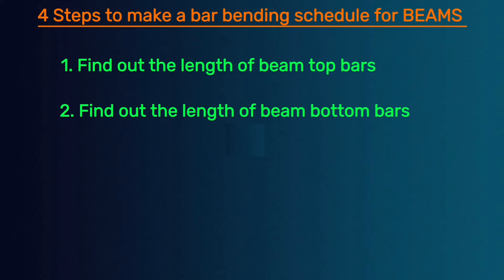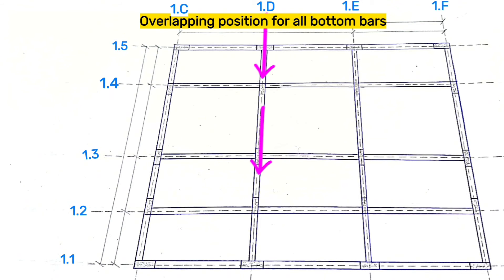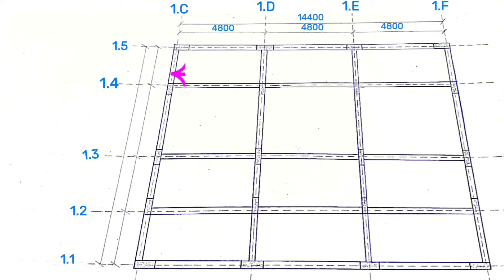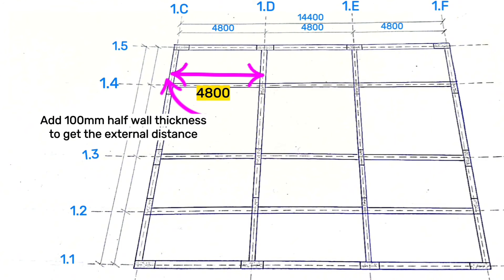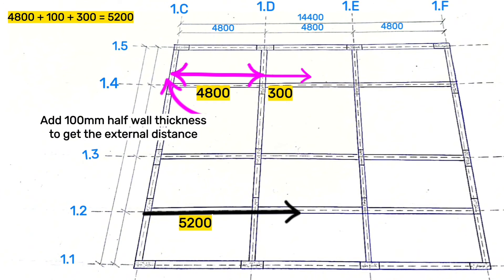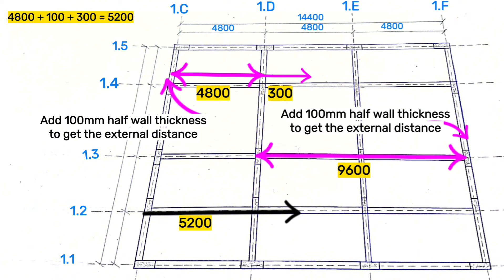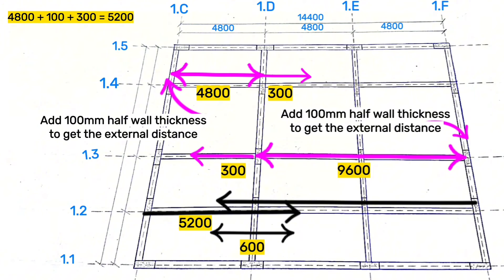Step two is to find out the cutting length for beam bottom bars. We chose columns along gridline 1D as the overlapping position for all bottom bars. From gridline 1C to 1D is 4.8 meters — add 100 millimeters to get 4.9 meters, then add 300 millimeters overlap to get 5.2 meters. From gridline 1F to 1D is 9.6 meters — add 100 millimeters for half wall thickness to get 9.7 meters, then add 300 millimeters overlap to make the total 10 meters. So the first bar is 5.2 meters and the second bar is 10 meters.